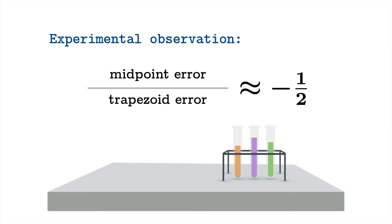Now at this point you might ask yourself, if the midpoint error is always half the error of the trapezoid error, why bother with the trapezoid sum at all? Why not just use the midpoint sum?